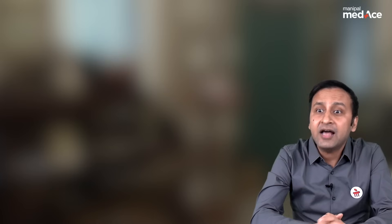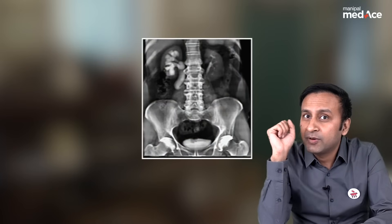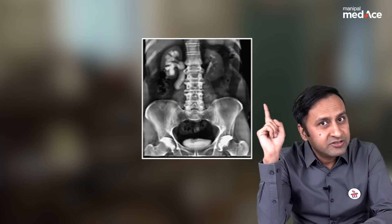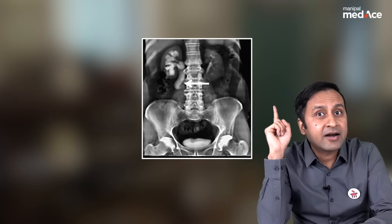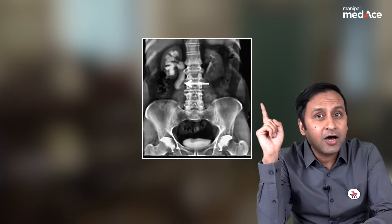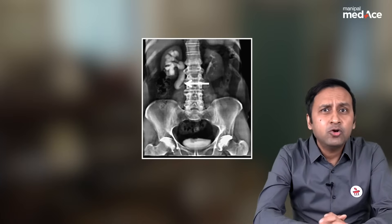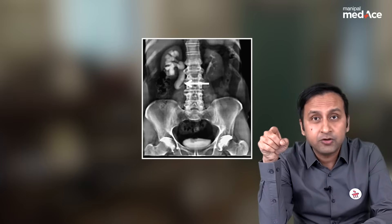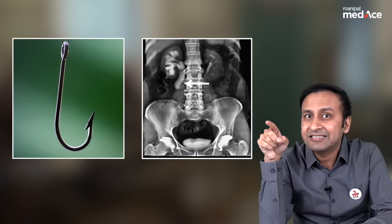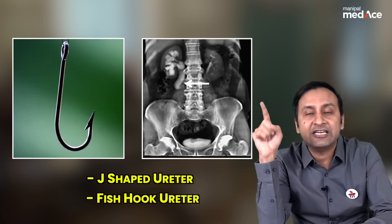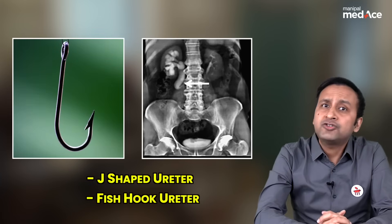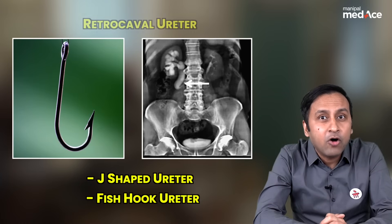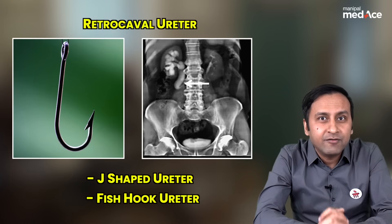Let's look at our third case. There is dilatation of the right ureter along with right hydronephrosis. Look at the shape of this ureter — there is abrupt narrowing and the ureter appears kinked, just like a fish hook or J-shaped ureter. This fish hook or J-shaped ureter is a classical example of a retrocaval ureter.